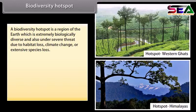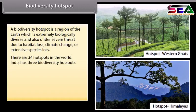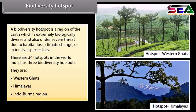A biodiversity hotspot is a region of the earth which is extremely biologically diverse and also under severe threat due to habitat loss, climate change, or extensive species loss. There are 34 hotspots in the world. India has three biodiversity hotspots: the Western Ghats, the Himalayas, and the Indo-Burma region.